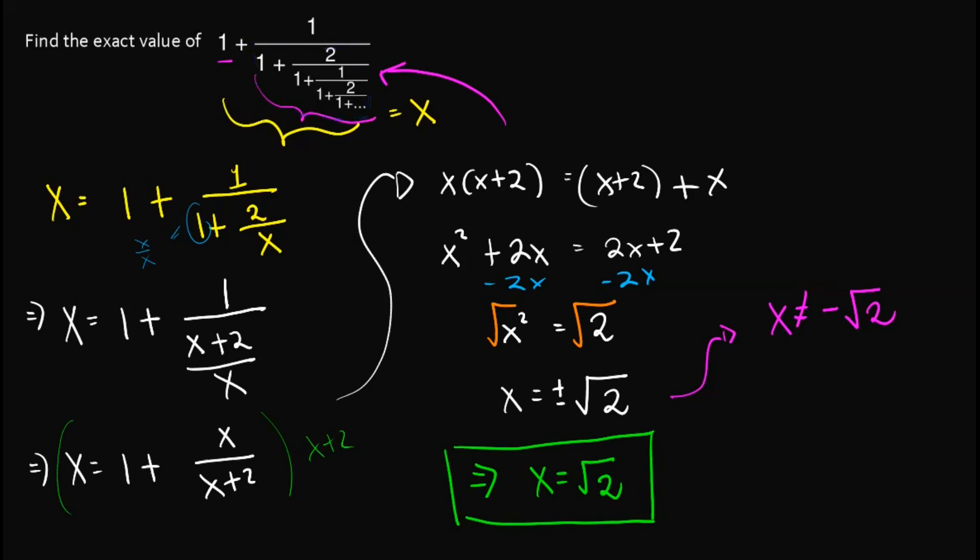The first thing to notice is that the part out here is not just x, we can't just put x out here since the part of the pattern where it repeats is out here. That's why there is 1 plus 2 over x out here. So that is one thing to take note. And then the rest is just quadratic equation.